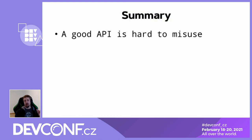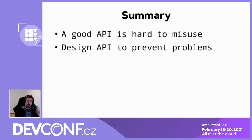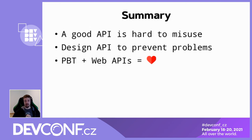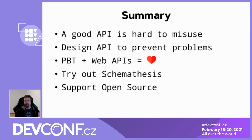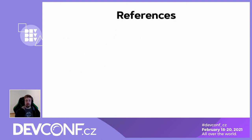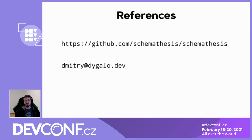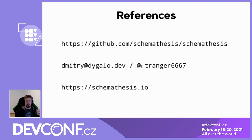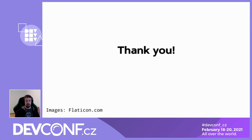To summarize: keep in mind that a good API is hard to misuse in the first place, and that you can prevent many problems upfront by designing them right. Property-based testing is effective for finding defects in web applications. Try out Schema Thesis — let me know what you think, and please consider supporting our work. Contributions and donations are welcome. You can find Schema Thesis on GitHub, feel free to write me an email or ping me on Twitter. Thank you very much for having me.